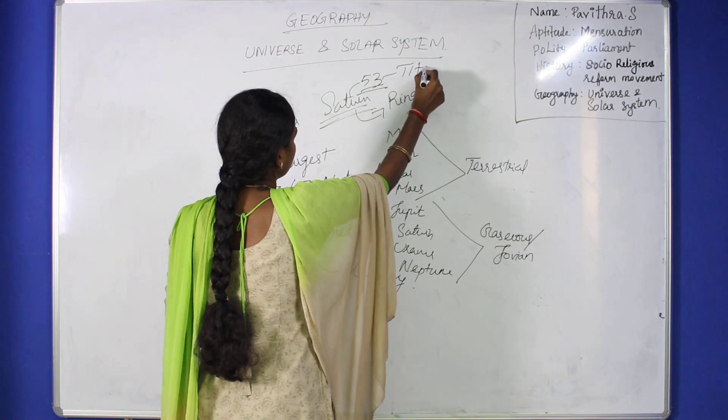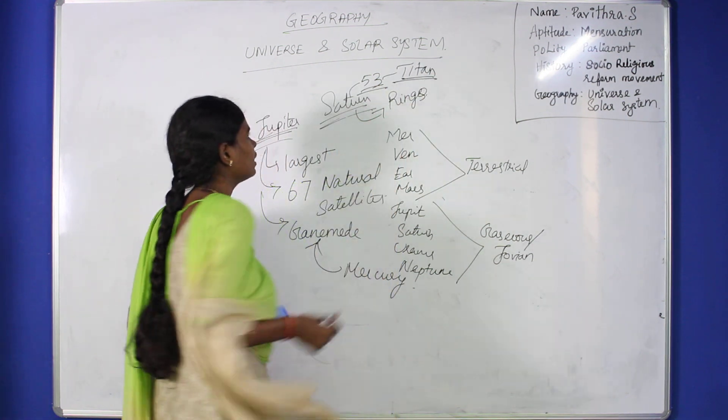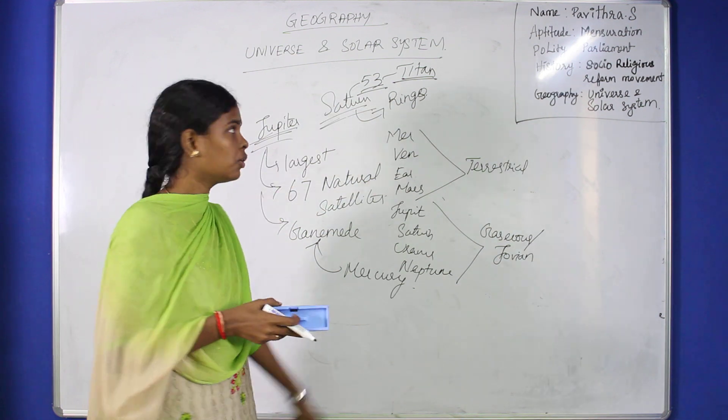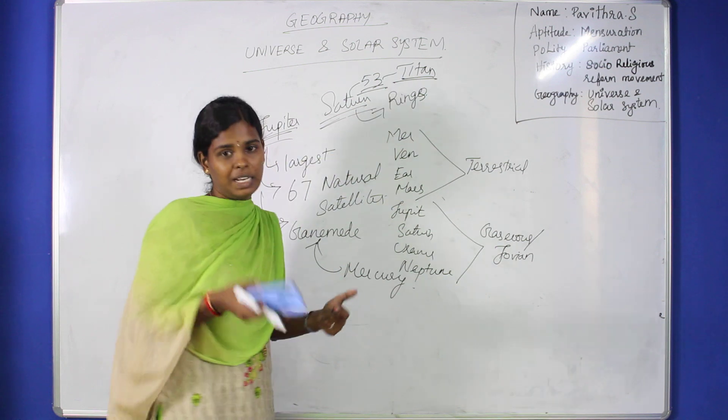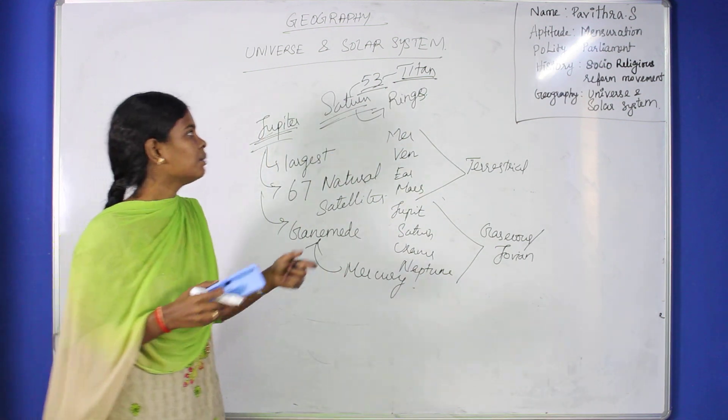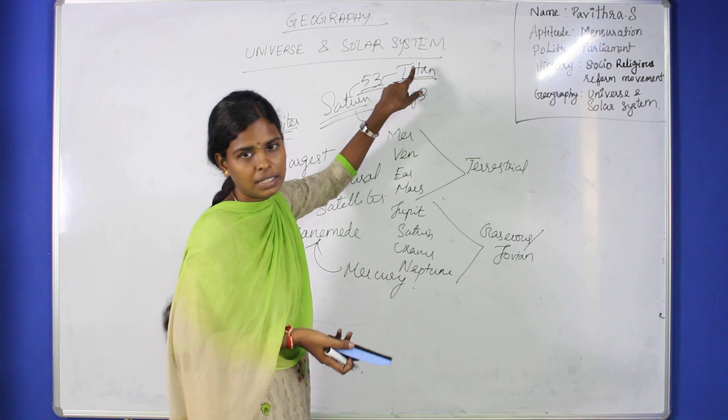Titan is a special satellite of Saturn. Titan, like Earth, has an atmosphere with clouds. Titan is the only satellite with a thick atmosphere like Earth.